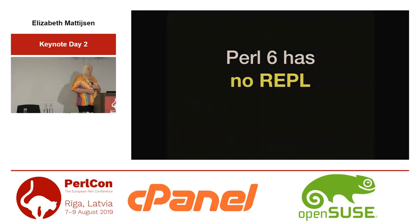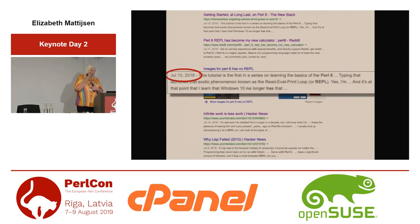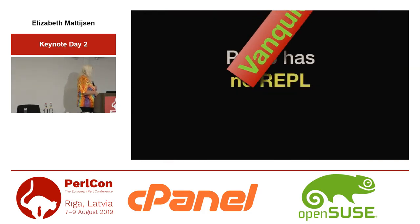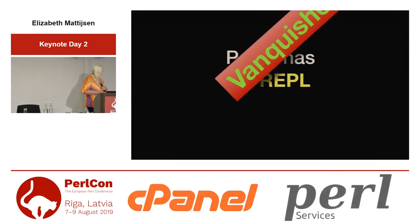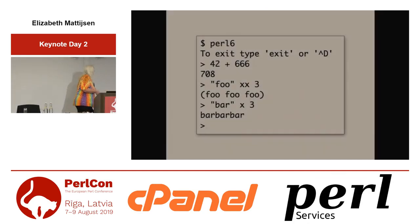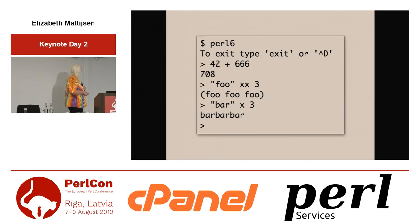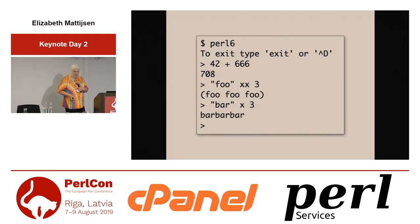Another myth: Perl 6 has no REPL. That's actually not alive — it actually has a REPL, and I couldn't find anything recent about this claim, so I would say this is vanquished. To give you an example: you just type in Perl 6, it tells you how to exit, you type an expression and get the result. As I'll point out for the Perl 5 people: 'xx' is the version creating lists, and 'x' is the version repeating strings and concatenating them.